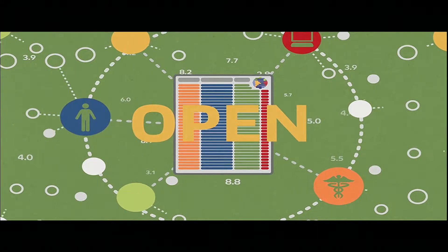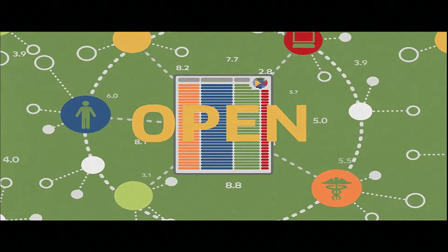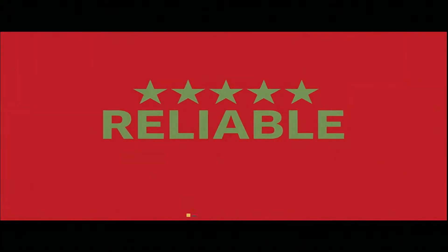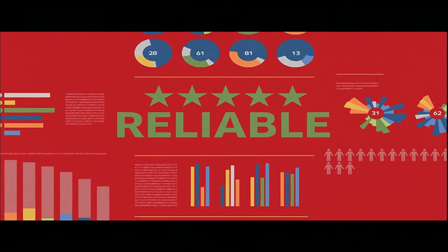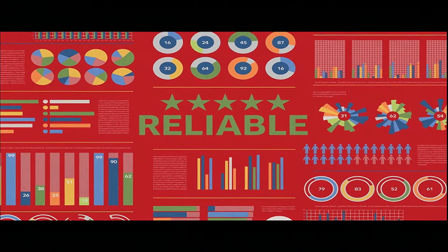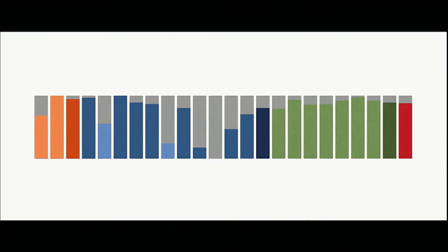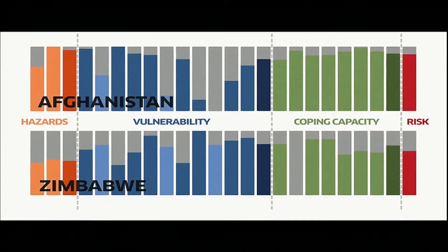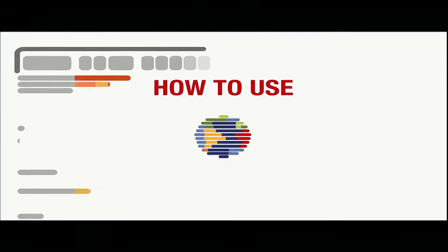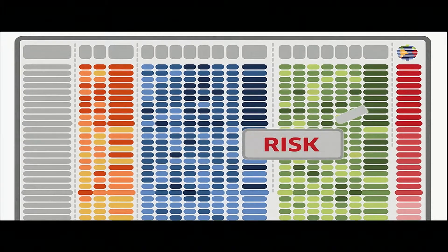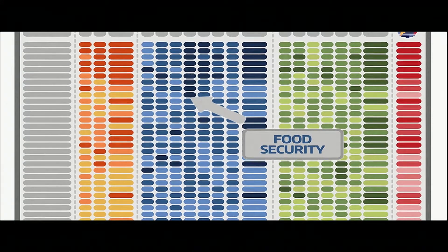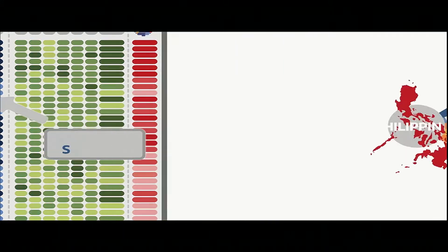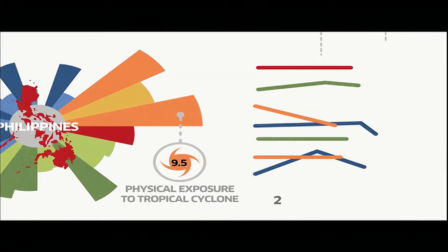It's open — the data and methodology are freely available. And it's reliable — it's based on the best methods and data and is regularly updated. INFORM creates a risk profile for every country, each with a rating between 0 and 10 for risk and all of its components, so it's easy to compare. You can prioritize countries by risk or any of its component parts.